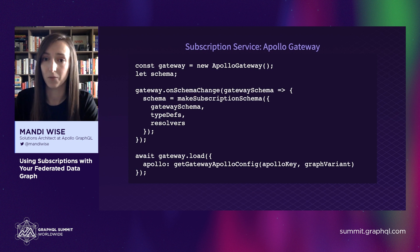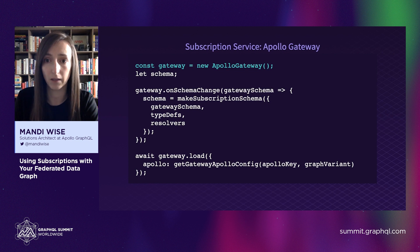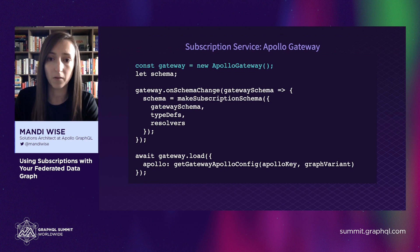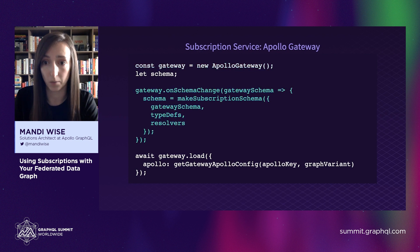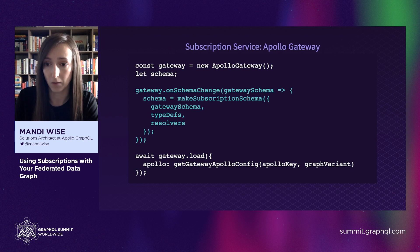This is where things start to get really interesting. To get the schema for the federated datagraph, we can instantiate an Apollo Gateway object directly in the subscription service. In this example we're using managed federation, so there would be an Apollo key variable set in the environment and we don't need to provide a service list option in its config. This gateway is different from what we're used to seeing because we're not going to pass it directly into an Apollo Server. We will set an onSchemaChange option that incorporates the gateway schema with the subscription service's type definitions and resolvers to make an executable schema. The onSchemaChange option runs whenever the gateway polls Apollo Studio and detects a change.